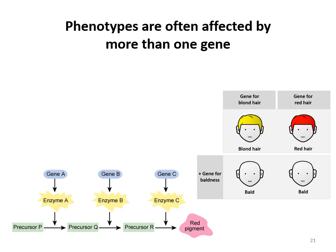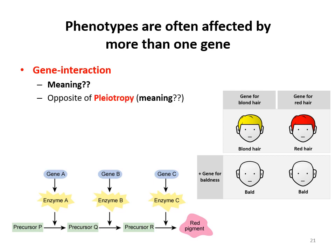In addition to multiple alleles affecting what you see, phenotypes are often affected by more than one gene — usually a gene pathway leads to the final thing you see. There are two terms regarding this. First, gene interaction: several genes influencing a particular characteristic. This is the opposite of pleiotropy — circle that word — which is when a single gene has multiple phenotypic effects. So gene interaction is multiple genes influencing a phenotype, whereas pleiotropy is a single gene having multiple phenotypic effects.